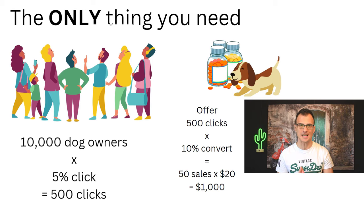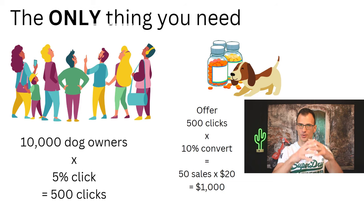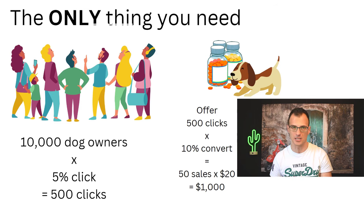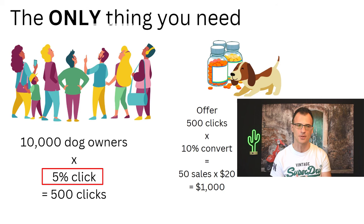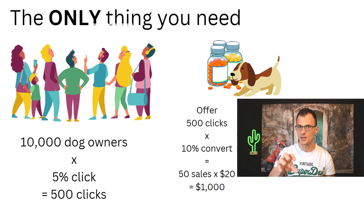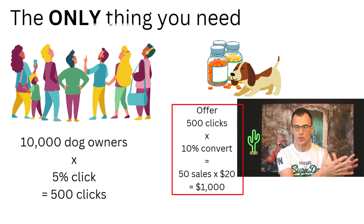This example works in any niche, but let me give you an example in the dog owners niche. Let's say you figure out how to generate an audience of 10,000 dog owners — you find them on YouTube, your website, or wherever. If just 5% of them click through on some kind of offer, like dog vitamins, that's 500 clicks. Out of those 500, if just 10% are buying, that's 50 sales. At $20 commission per sale, you've just made $1,000 from that audience of 10,000 dog owners.